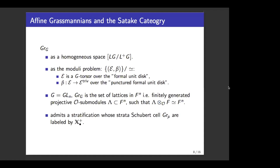Let me say a few words on the affine Grassmannian and the Satake category. There are a few perspectives towards the affine Grassmannian. First, we can think of it as a homogeneous space LG/L⁺G. Here LG is the formal loop group, while L⁺G is the formal jet space of G. Alternatively, we can think of Gr as the geometric object which represents the moduli problem classifying the set of isomorphism classes of pairs (E, β), where E is a G-torsor — you can think of it as a principal G-bundle on a formal unit disk — and β is an isomorphism between E and the trivial G-torsor on a punctured formal unit disk. In the equal characteristic case, the formal unit disk can be thought of as Spec of C[[T]]. In the mixed characteristic case, it is constructed via the ring of Witt vectors.